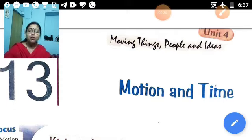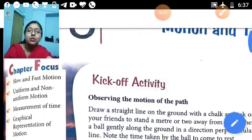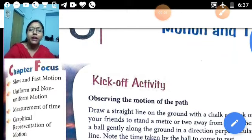So in this chapter we will study about motion and time. Come first to chapter 4. There are the main topics: slow and fast motion, uniform and non-uniform motion, measurement of time, and graphical representation of motion.